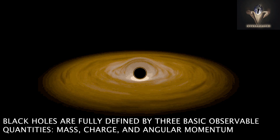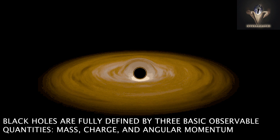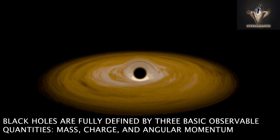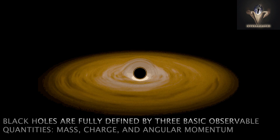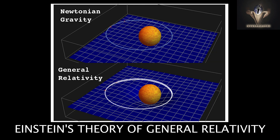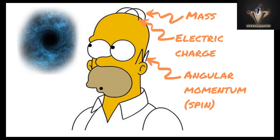Stationary black holes are fully defined by three basic observable quantities: mass, charge, and angular momentum, which fulfills Einstein's theory of general relativity. Almost none of the data about what was consumed by the black hole is accessible from the outside.